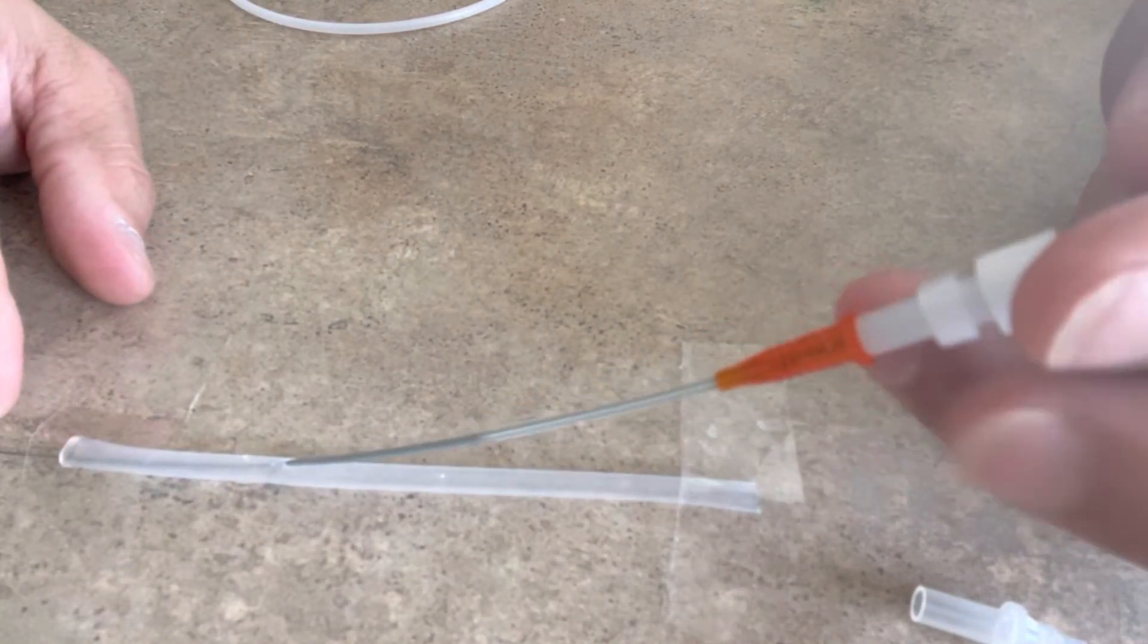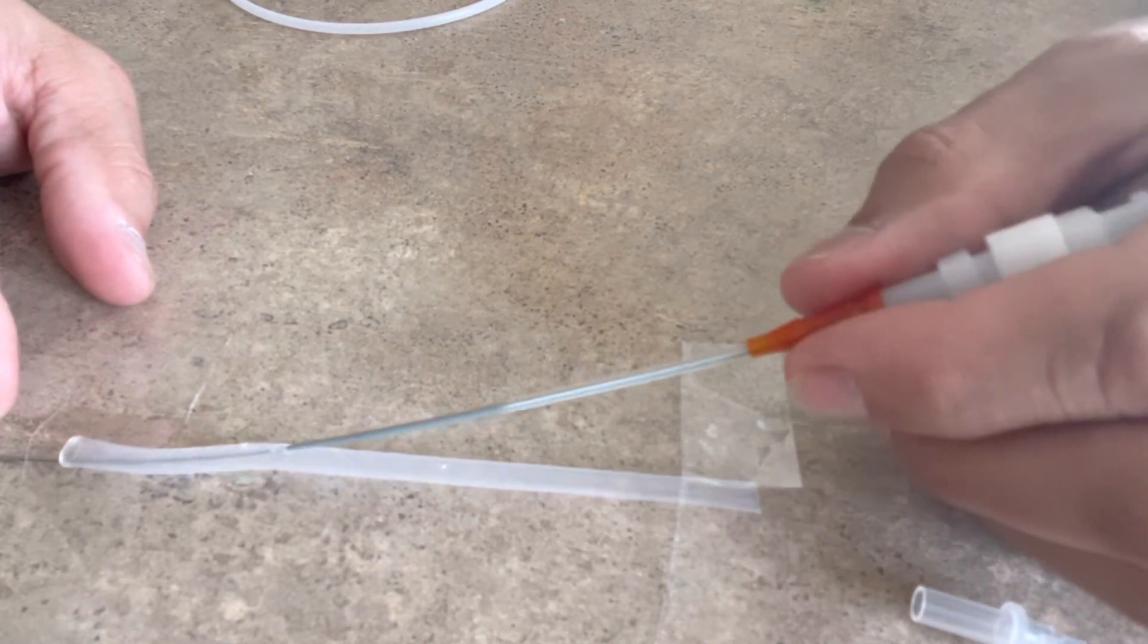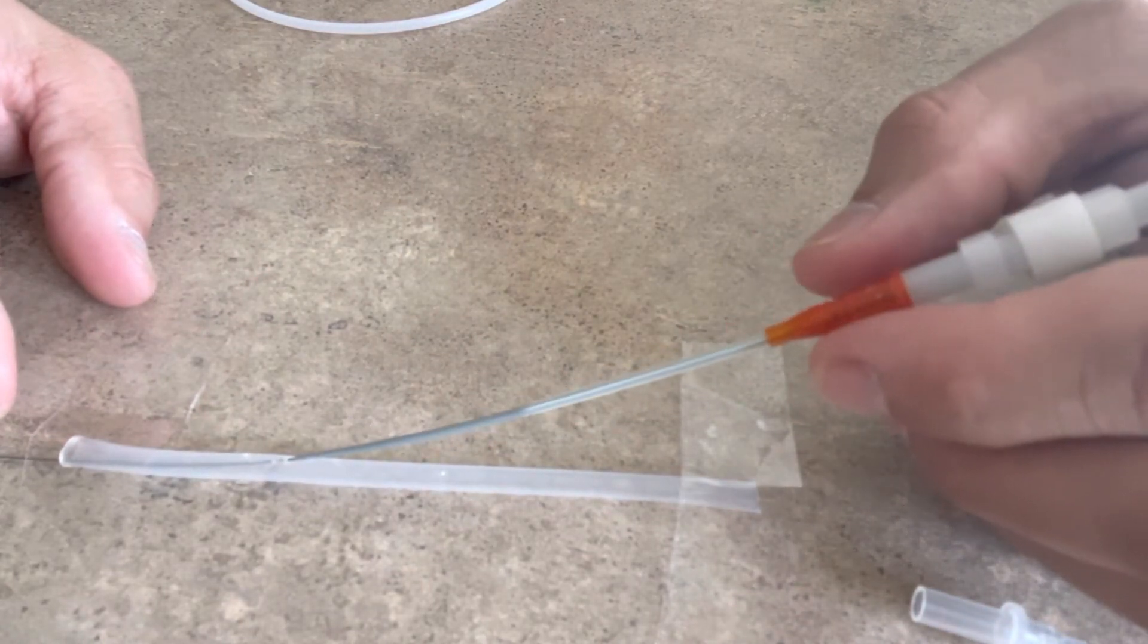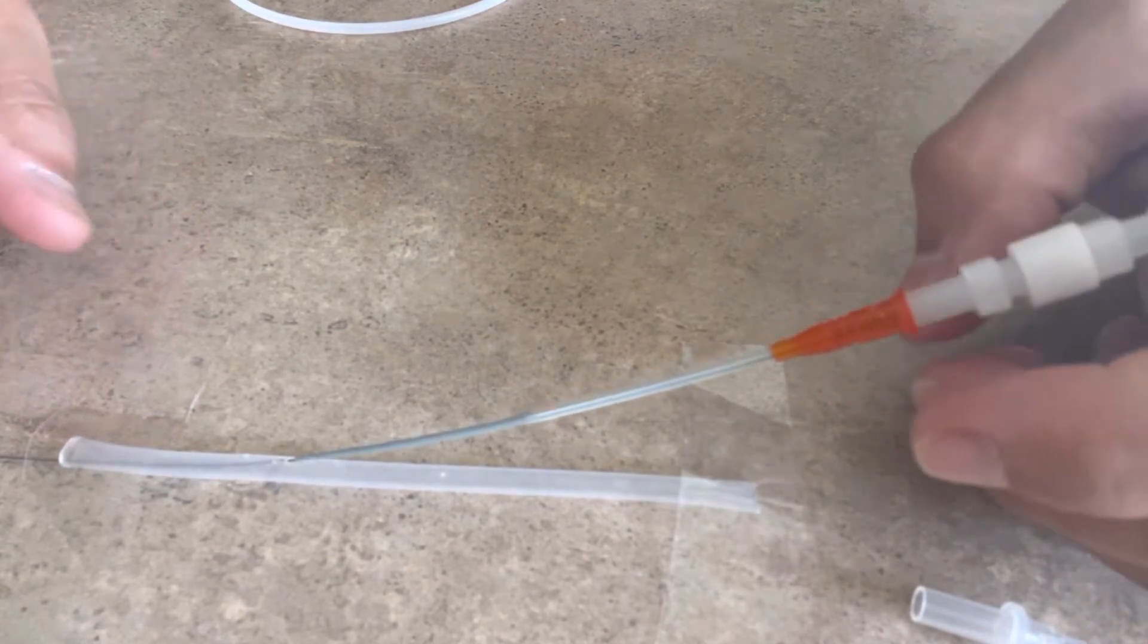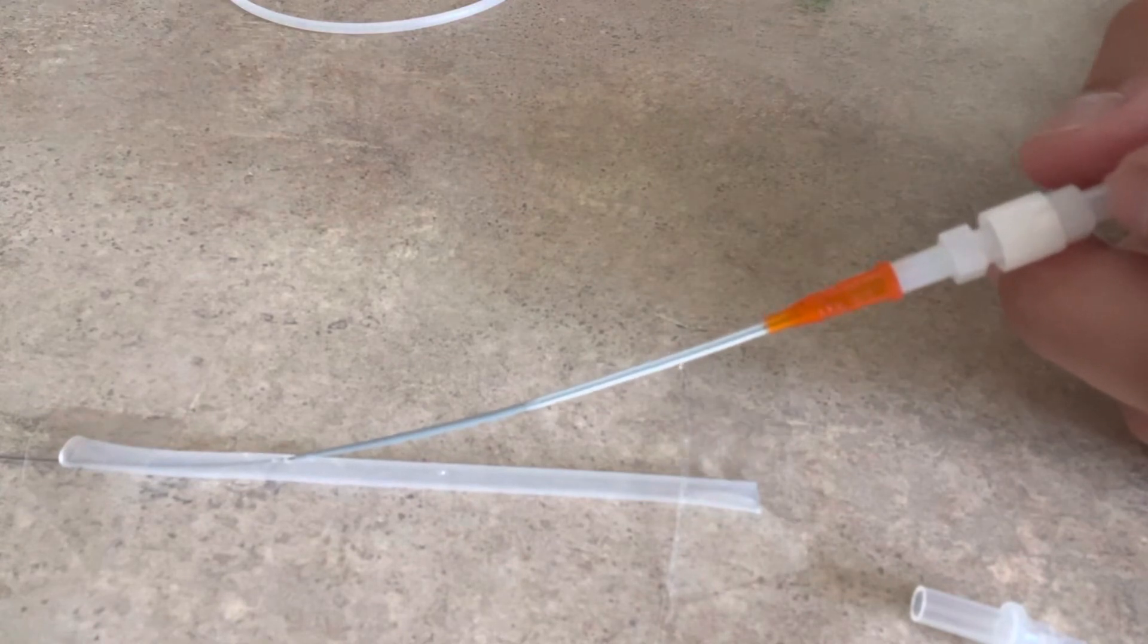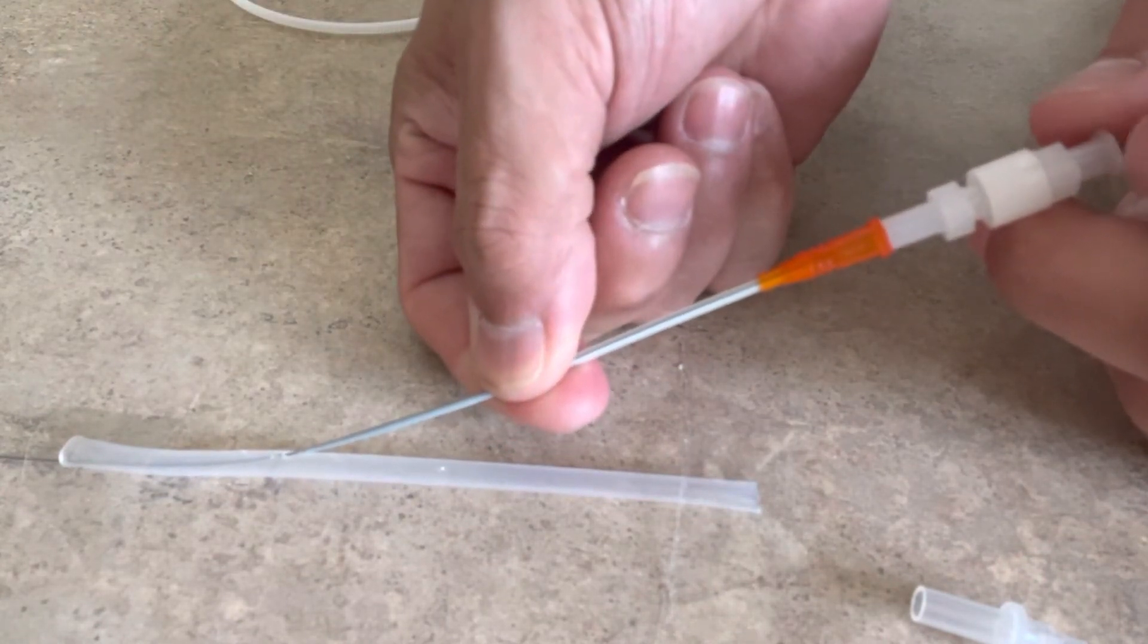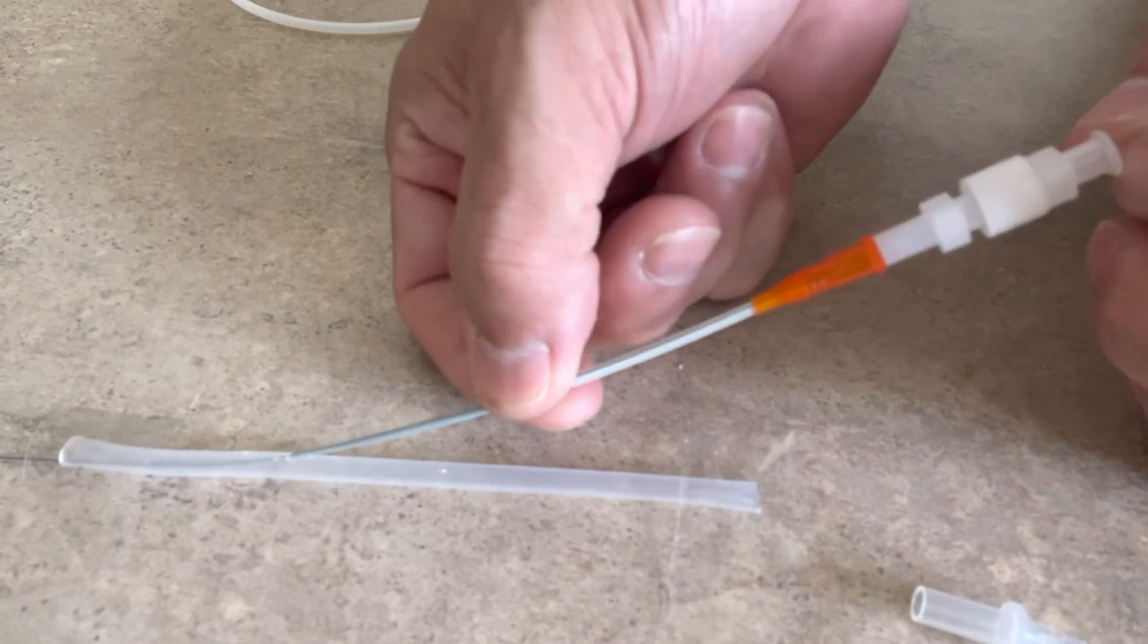So like any standard Seldinger technique, I'm going to hold my wire at the back end over here. But the key thing to this here is before you even get into the vessel, what you have to do is actually get through the skin. In order to facilitate getting through the skin, I'll take my finger and I'll pinch between the angiocatheter and the dilator and keep them together.